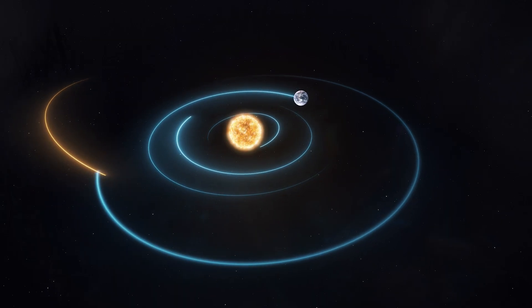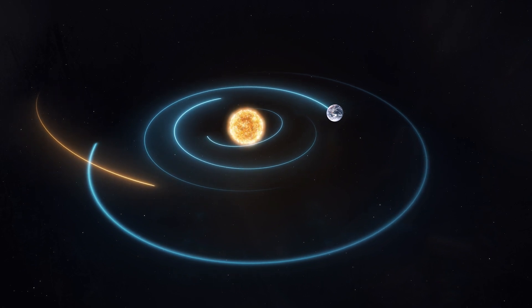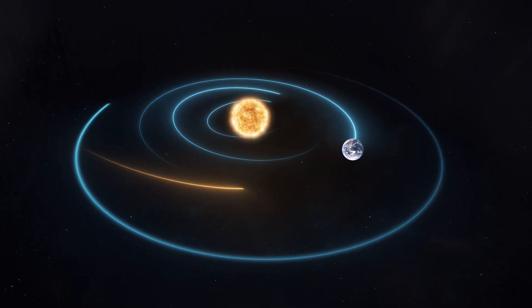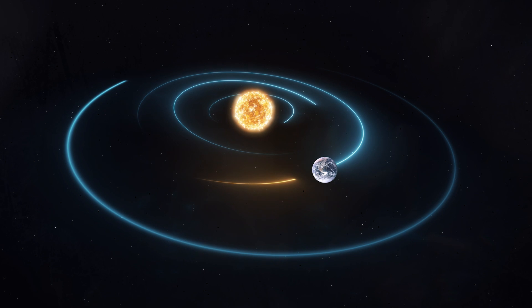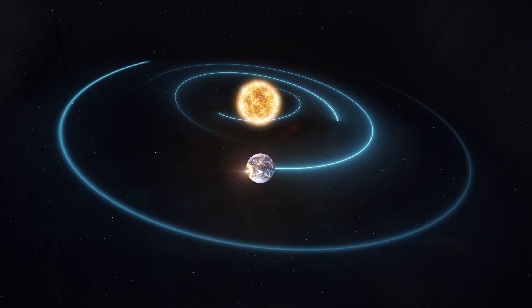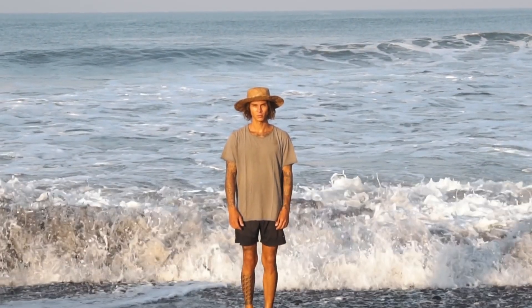Solar System's Speed. Our solar system is hurtling through the Milky Way galaxy at an average speed of 828,000 kilometers per hour. We're constantly moving, even when it feels like we're standing still.